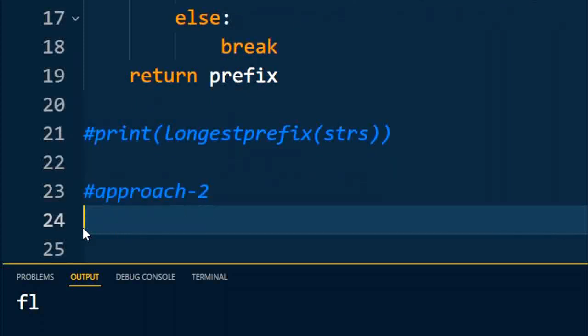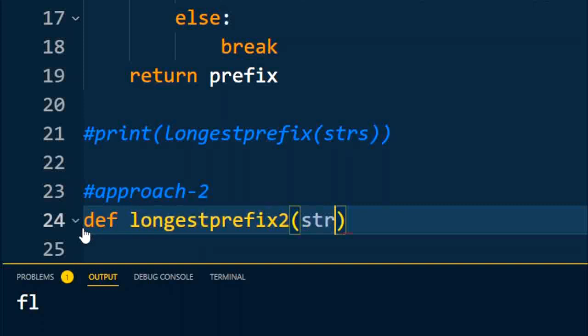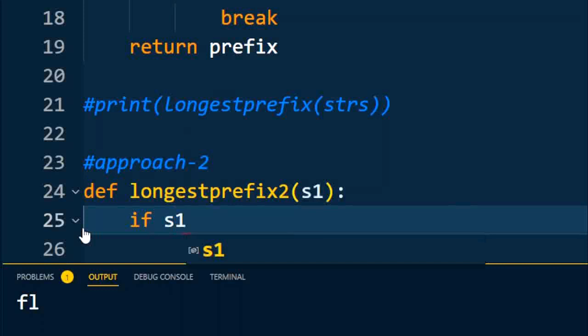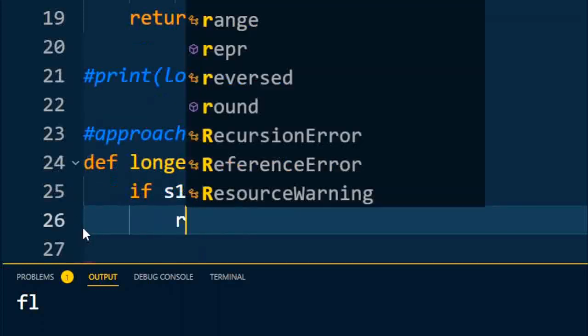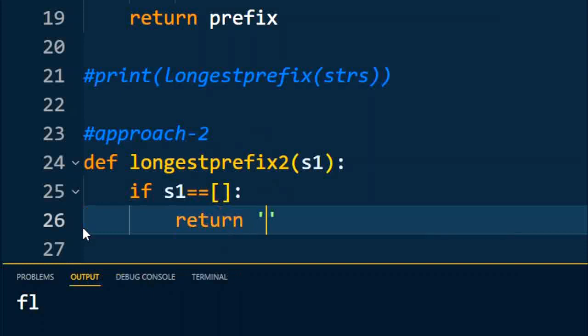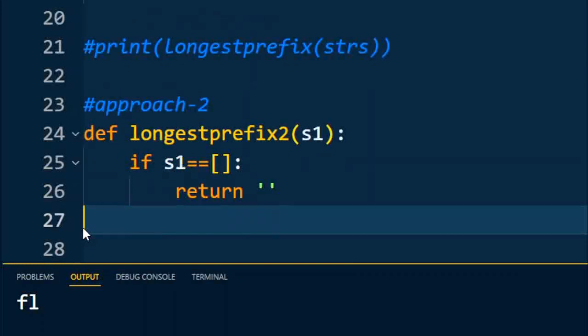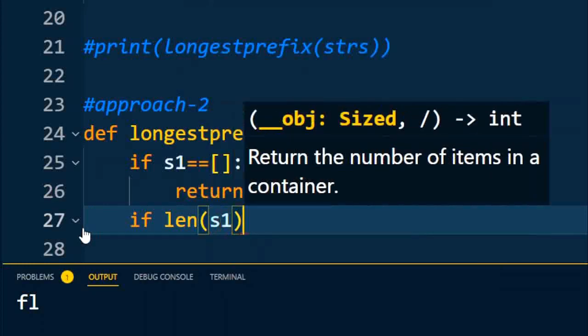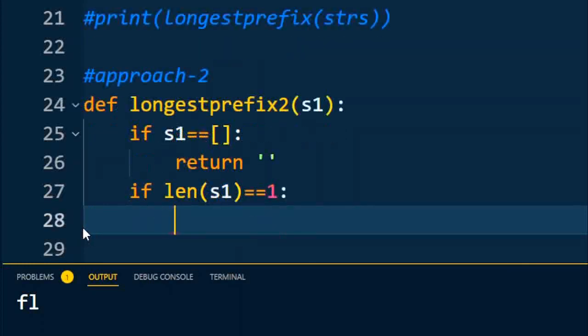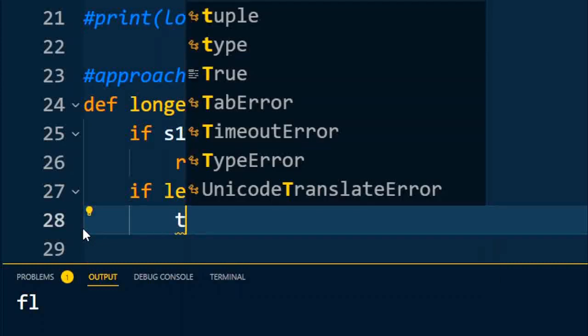Without using the sorting method, I am going to define the function longest_prefix2. The input to the function is s1. Again I will check if s1 is equal to null, it will return null.